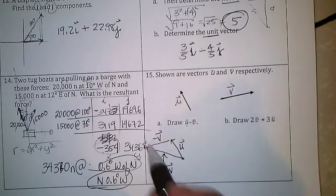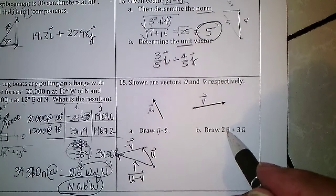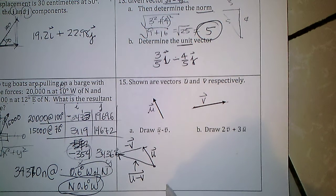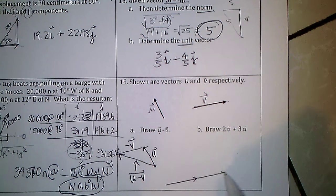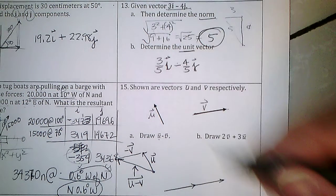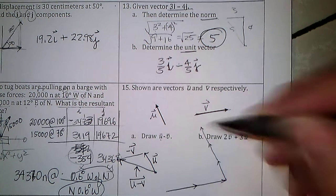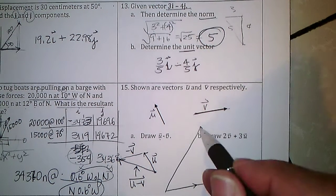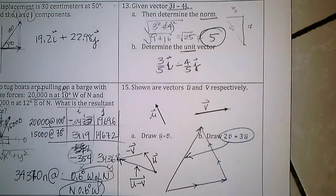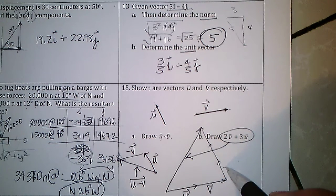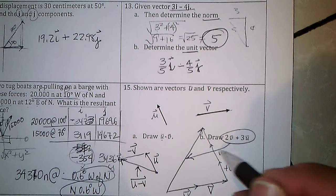So the total vector is: a u, then a v, plus another v, plus a u, another u, and another u. And that's it.